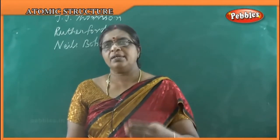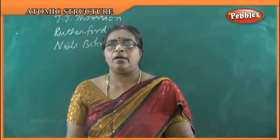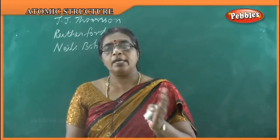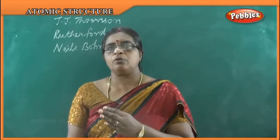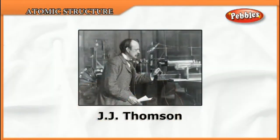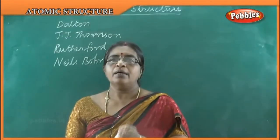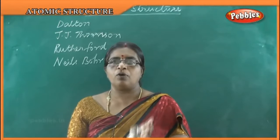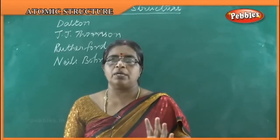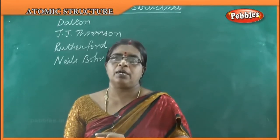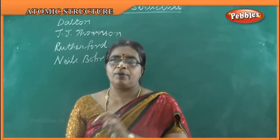Then he said that atom is an indivisible particle. But later, the next scientist — J.J. Thomson — gave the plum pudding model. What is meant by this plum pudding model? He said that the atom consists of all positive charge and electrons are embedded in the positive charge — a sea of positive charges.